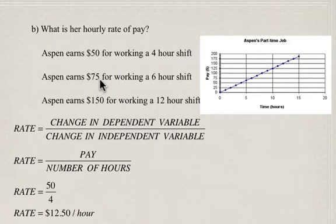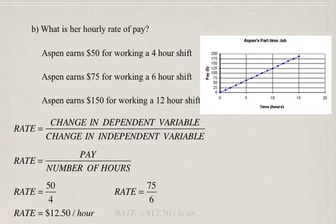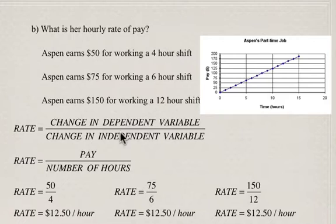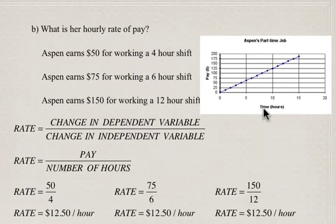The second example, $75 for a 6-hour shift: $75 divided by 6, pay divided by number of hours, gives $12.50 per hour. In the last example, $150 for a 12-hour shift gives $12.50 per hour. One thing to emphasize: the dependent variable is assigned when something depends on something else. In this case, your pay depends on the number of hours you work. It's critical to start thinking about identifying dependent and independent variables this way.